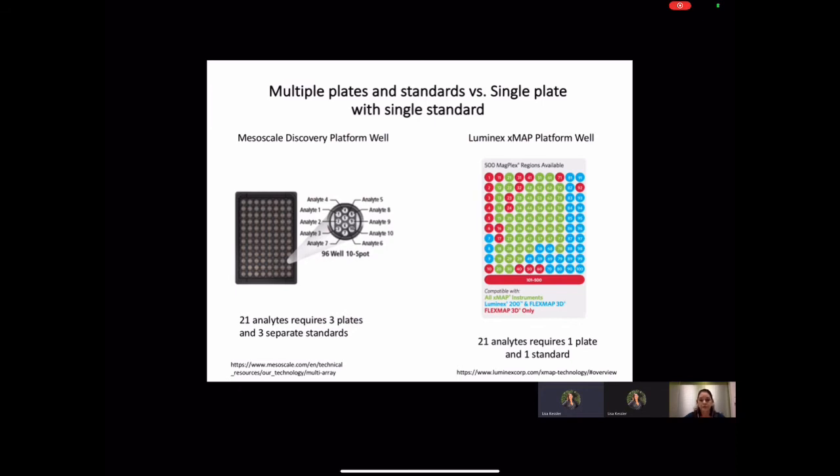Since we chose to run the assays according to the recommended incubation times, we were able to run the platforms in parallel because we could set up the Milliplex assay during the first mesoscale two-hour incubation period. The Luminex assay was incubated overnight at four degrees. While we were running these assays in parallel, we could get an idea of the labor cost for our core's pricing. We had a private company hired to perform a time-in-motion study to assess how much time and effort was required for each platform.